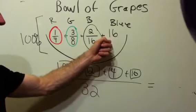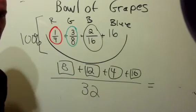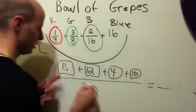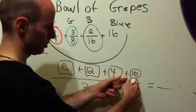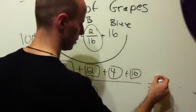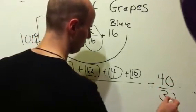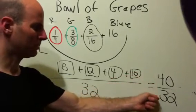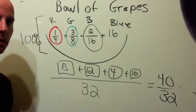Well, guess what? If I add up all my parts, eight plus twelve is 20, plus four is 24, plus 16 is 40 grapes out of 32. There's a problem. My parts add up to something that's greater than the whole. That can't be, there must be a mistake.